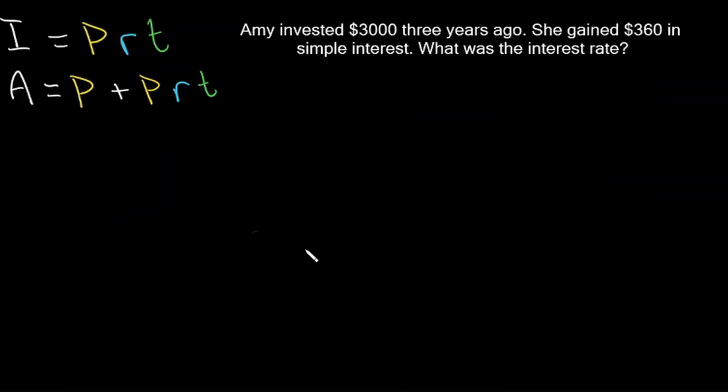Let's look at another example. Amy invested $3,000 three years ago. She gained $360 in simple interest. What was the interest rate? So here we can see that our principal value was $3,000 and our time is three years. We see $360 in simple interest, so our interest is $360. But we are asked to solve for the interest rate.